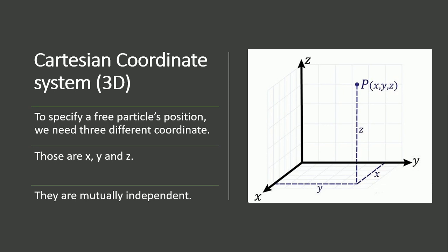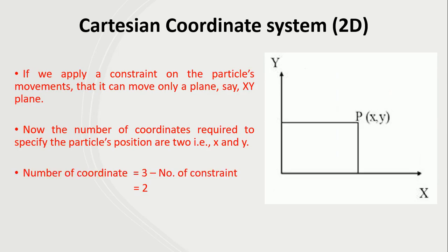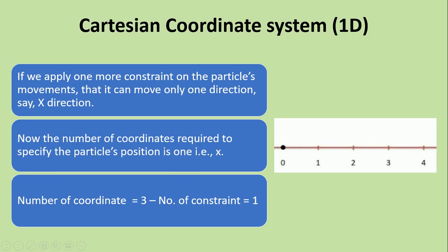If we move to a Cartesian coordinate system in two dimensions, we have already applied a constraint on the particle's movement — it can move only in a plane, say the XY plane. To specify the particle's position in the XY plane we need only two coordinates, X and Y. The number of coordinates required equals three minus one, where one is the number of constraints, giving us two coordinates.